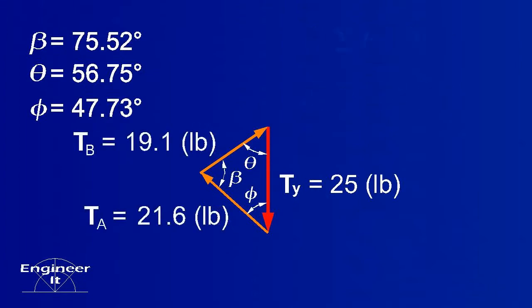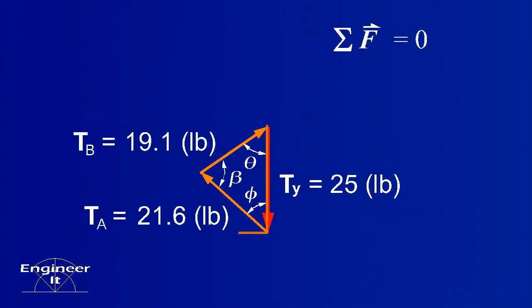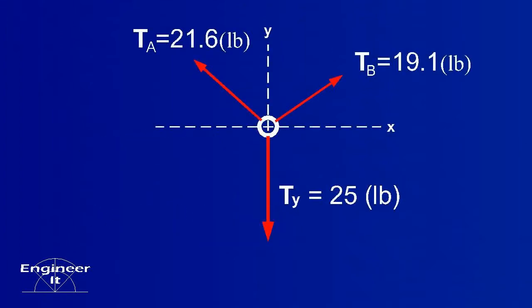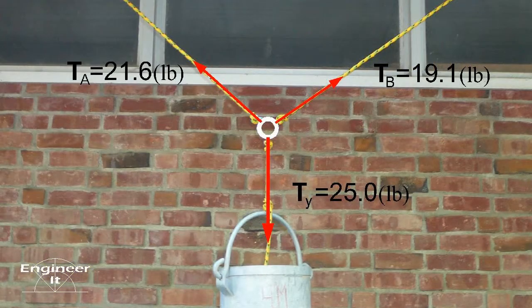Since the vectors formed a closed polygon, the sum of the forces in the x-direction must equal zero, and the sum of the forces in the y-direction must equal zero. Knowing the magnitude of the vectors means we know the tensions in the ropes, which completes this problem.